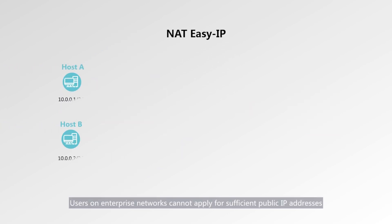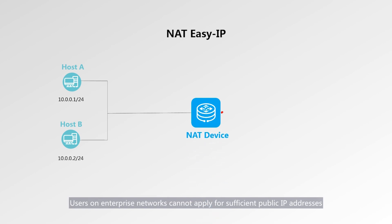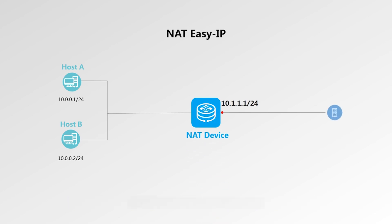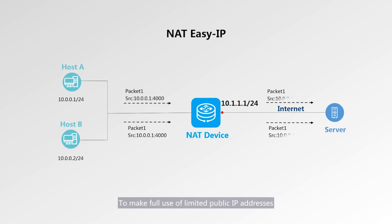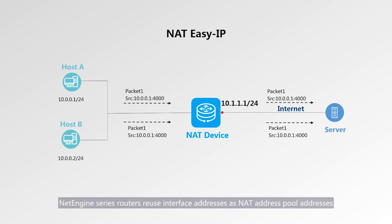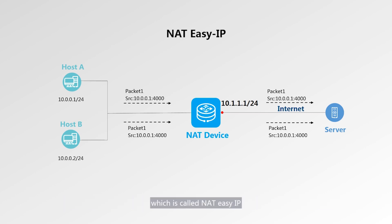Users on enterprise networks cannot apply for sufficient public IP addresses. The NAT function is used for user access since merely a few public IP addresses are available. To make full use of limited public IP addresses, NetEngine series routers reuse interface addresses as NAT address pool addresses, which is called NAT Easy IP.